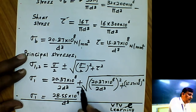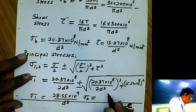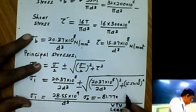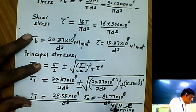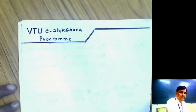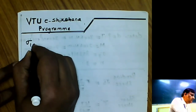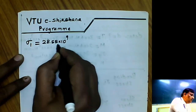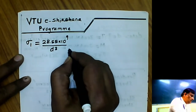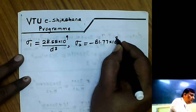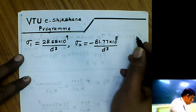The minimum principal stress σ₂ is obtained by taking the negative sign, which comes out to −81.77 × 10⁸ / D³. So we have both maximum principal stress σ₁ = 28.55 × 10⁹ / D³, minimum principal stress σ₂ = −81.77 × 10⁸ / D³, and σ₃ = 0. By knowing the principal stresses, we can apply the conditions for theories of failure.